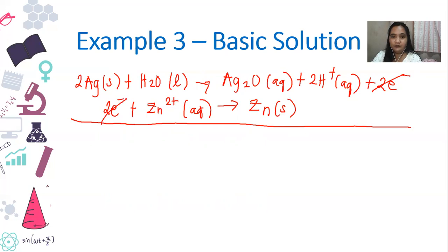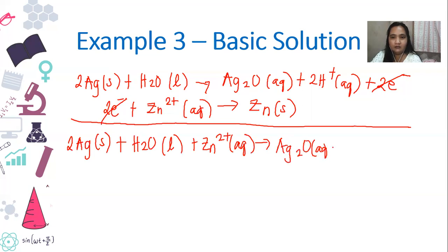One of our favorites, so we could cancel and then add the reactions. So that's 2Ag plus water plus zinc yields silver oxide, your two H protons and your zinc.